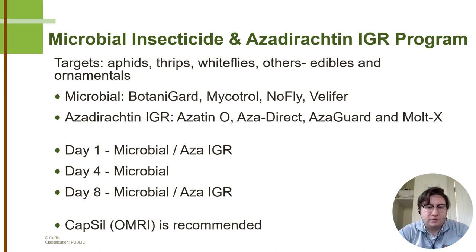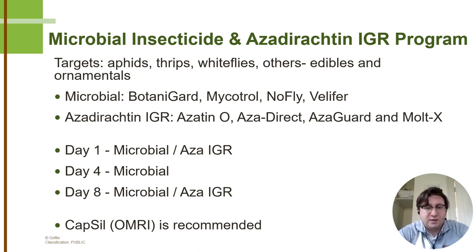If you heavily use microbial insecticides, we strongly recommend incorporating an azadirachtin-based IGR, as it provides a variety of benefits that pair well with microbials. Here is a common spray strategy we have found effective over the last couple of years for both edible and ornamental growers: day one, use a microbial paired with an IGR; day three or four, just the microbial; then day seven or eight, repeat the tank mix of the microbial and azadirachtin. Repeat this cycle as needed. We also recommend using Capsil, which is now OMRI-listed — it's a surfactant that helps spread both the microbial and the IGR uniformly over the leaf surface.